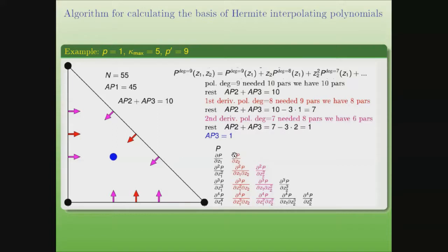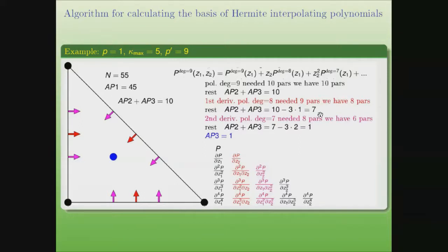The mixed derivative — that is, the first derivative with respect to the transversal variable — needs one parameter. So to describe them, we put conditions for the first derivative on each of the three sides. Thus we have seven conditions to determine the auxiliary polynomials.